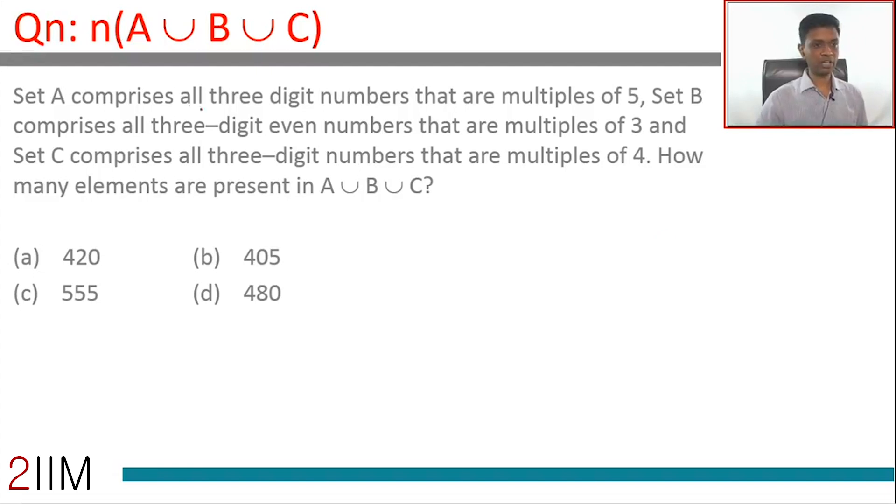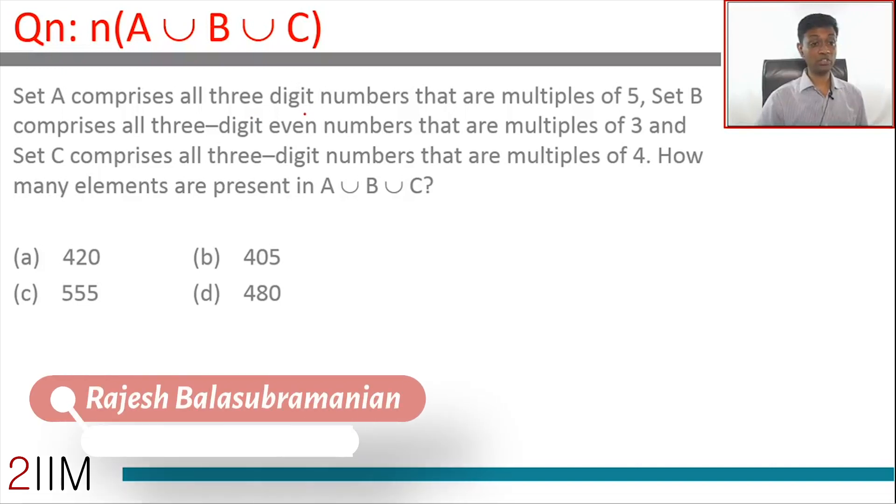Another old-fashioned question. Set A comprises all three-digit even numbers that are multiples of 5. Set B comprises all three-digit even numbers that are multiples of 3, and set C comprises all three-digit numbers that are multiples of 4.